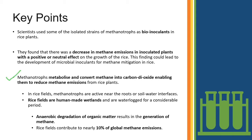Methanotropes metabolize and convert methane into carbon dioxide, enabling the reduction of methane emission from rice plants. In rice fields, methanotropes are active near the roots or at the soil-water interface. Rice fields are human-made wetlands — not natural wetlands — and are waterlogged for a considerable period of time, so anaerobic degradation of organic matter results in generation of methane.